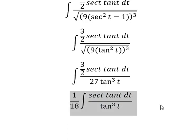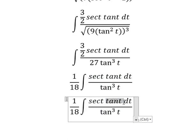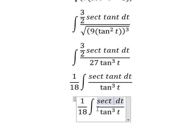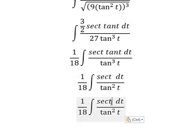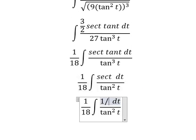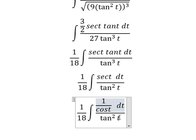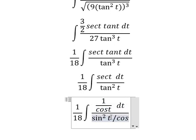And now we need to simplify tangent t. Next, secant of t, that is 1 over cosine t. This one, that is cosine squared t.